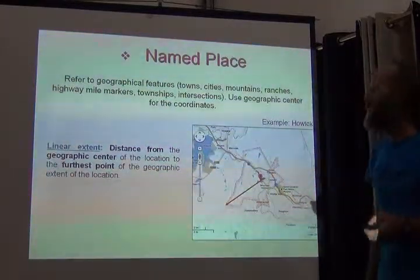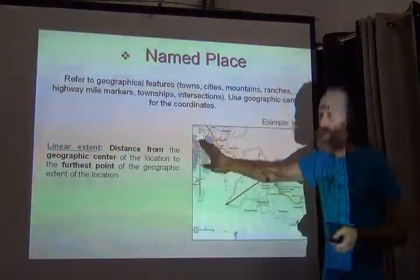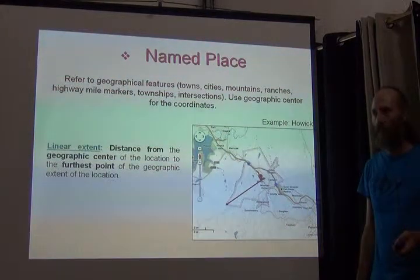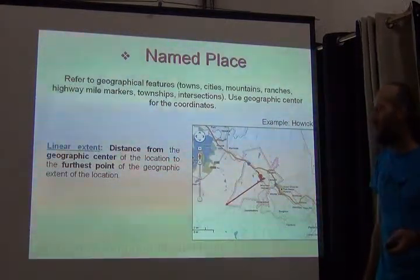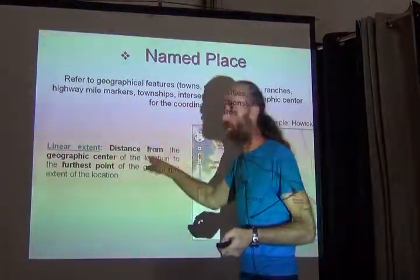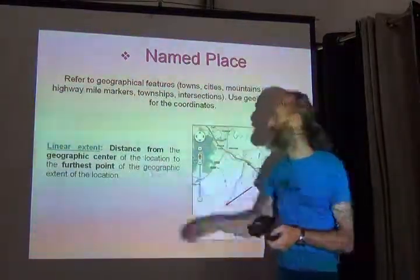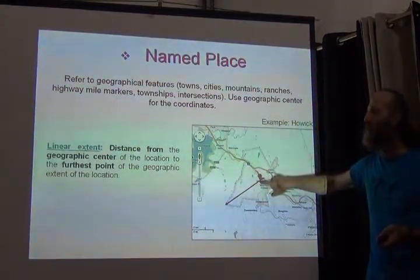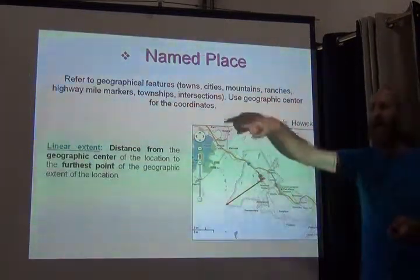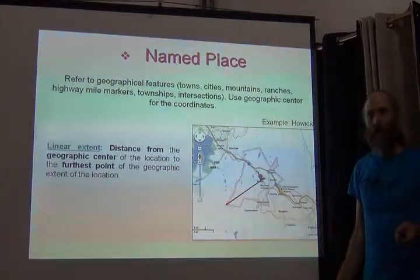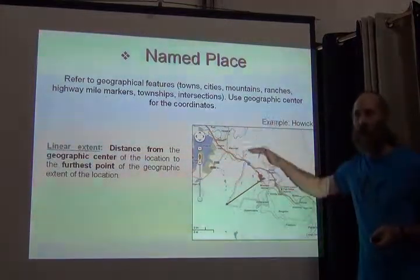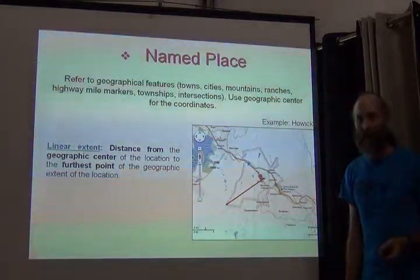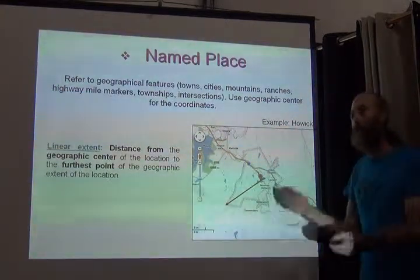Named places refer to any geographical feature you might find in a gazetteer — towns, cities, mountains, things with names and coordinates. The PowerPoint describes the concept of a linear extent for named places: it's always the distance from the geographic center of the location to the furthest point of its geographic extent. As I was helping you geo-reference earlier, this is information you didn't yet have — I hope you'll forgive me for giving you the method now.